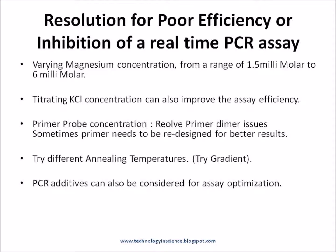Titrating KCl concentration can also improve assay efficiency. Primer and probe concentration optimization plays a major role, and primer dimer issues need to be resolved for better efficiency, specificity, and sensitivity. Sometimes primers need to be redesigned for better results. Thermal cycling optimization also plays a major role and should be adjusted based on the Tm values of the primers. PCR additives can also be considered for assay optimization.